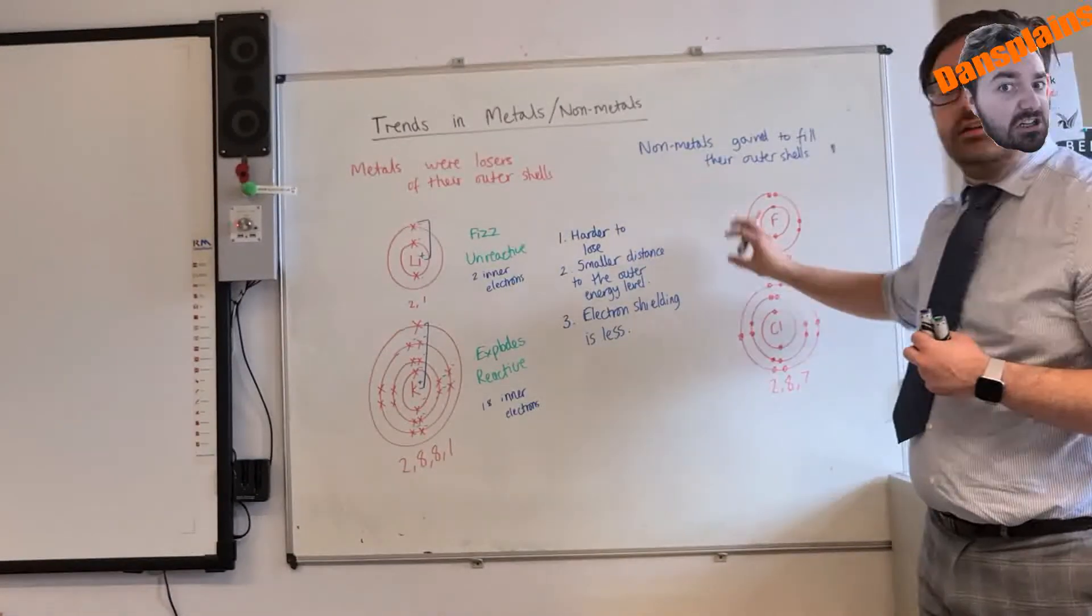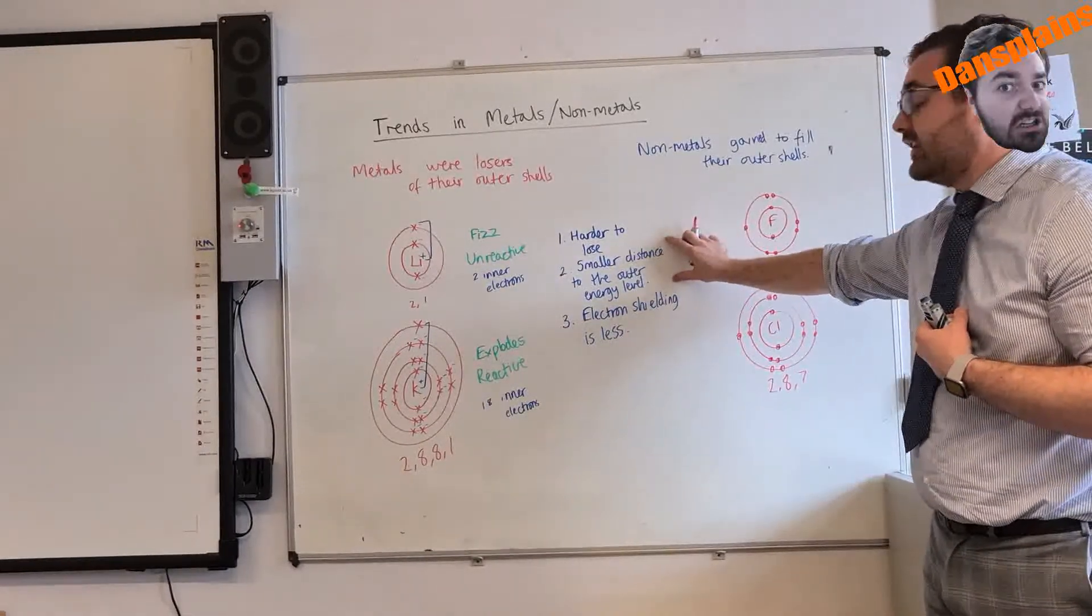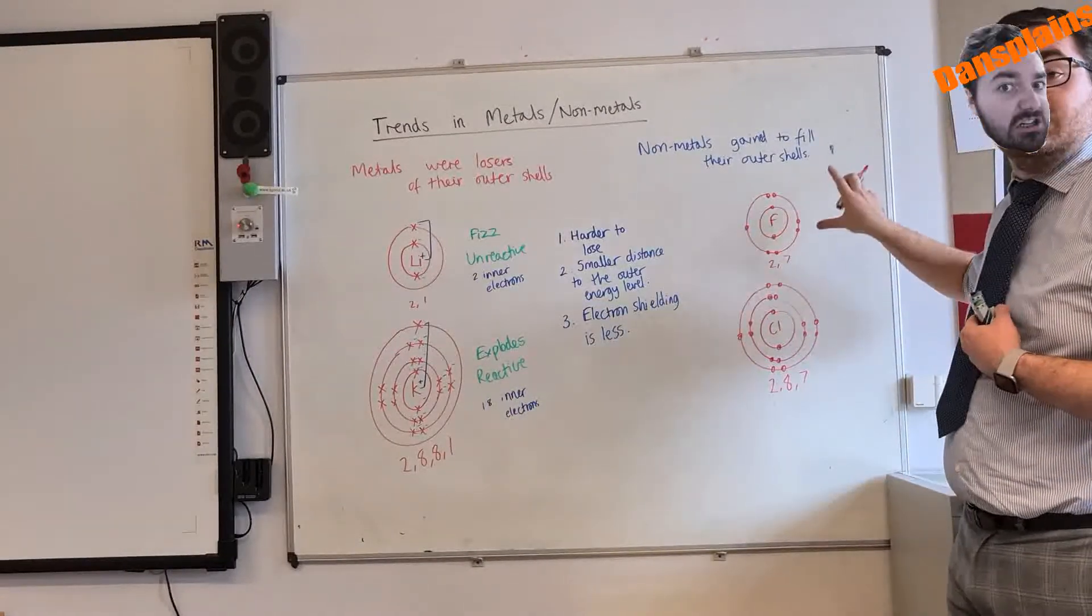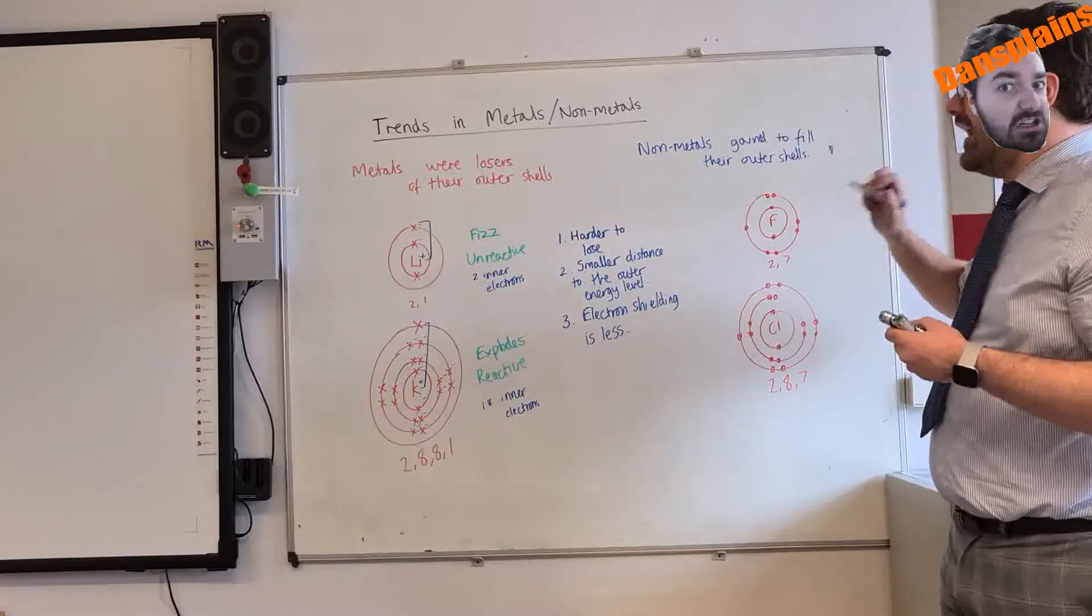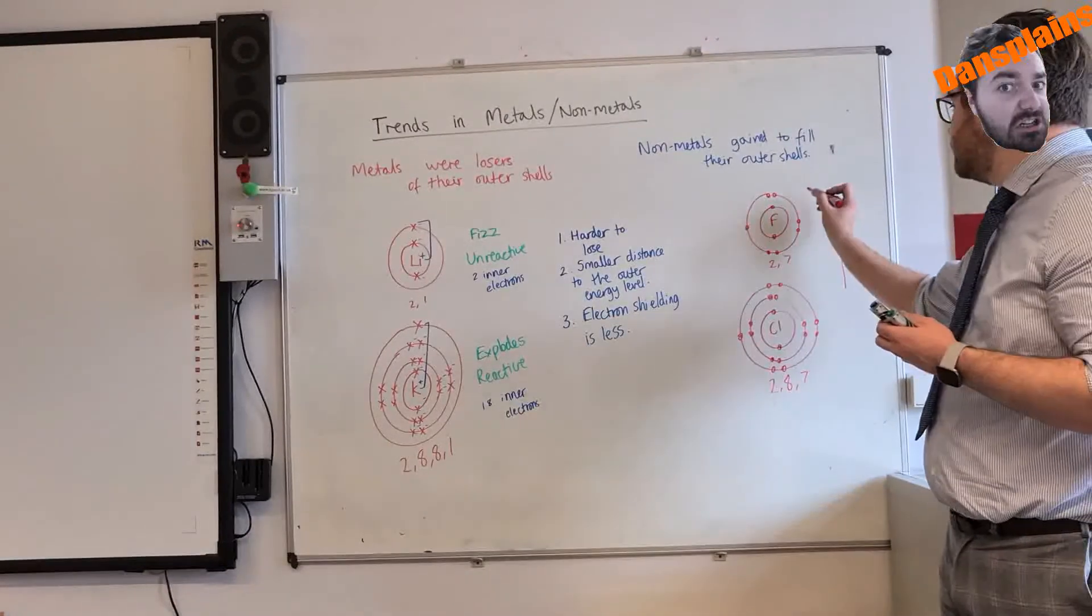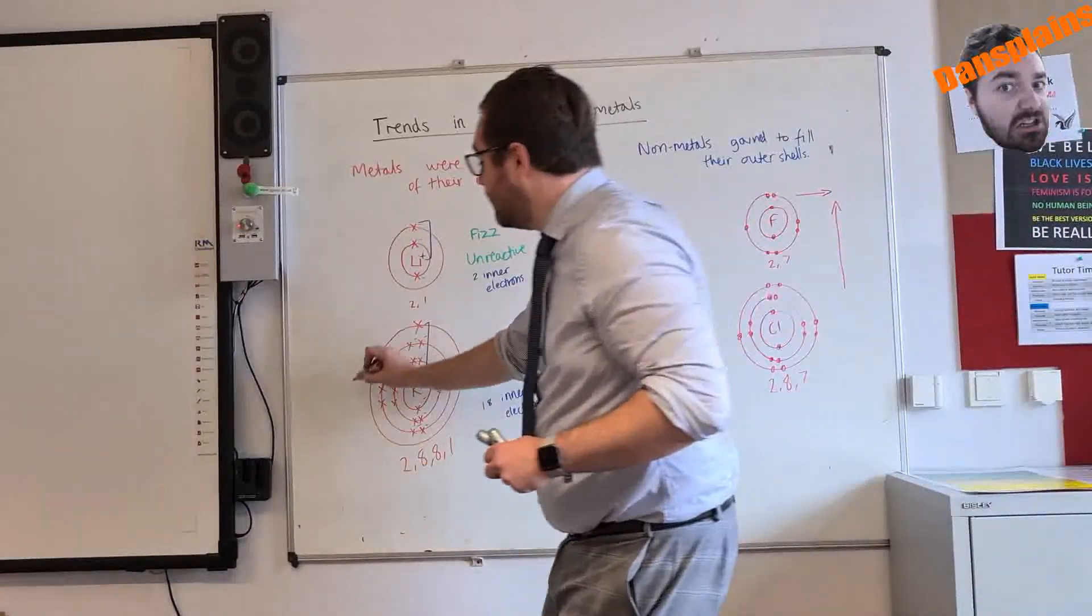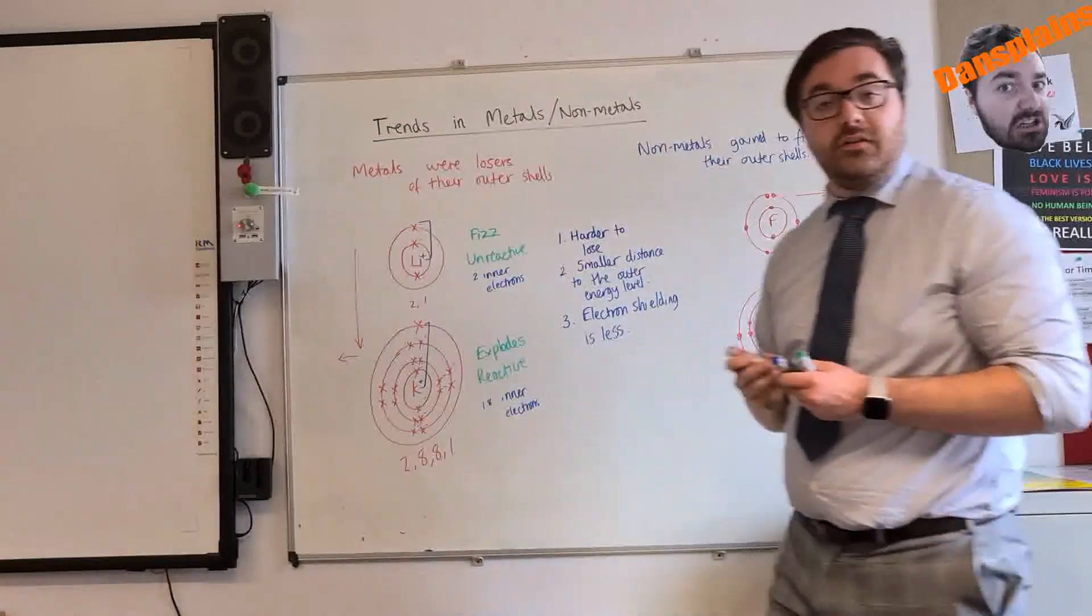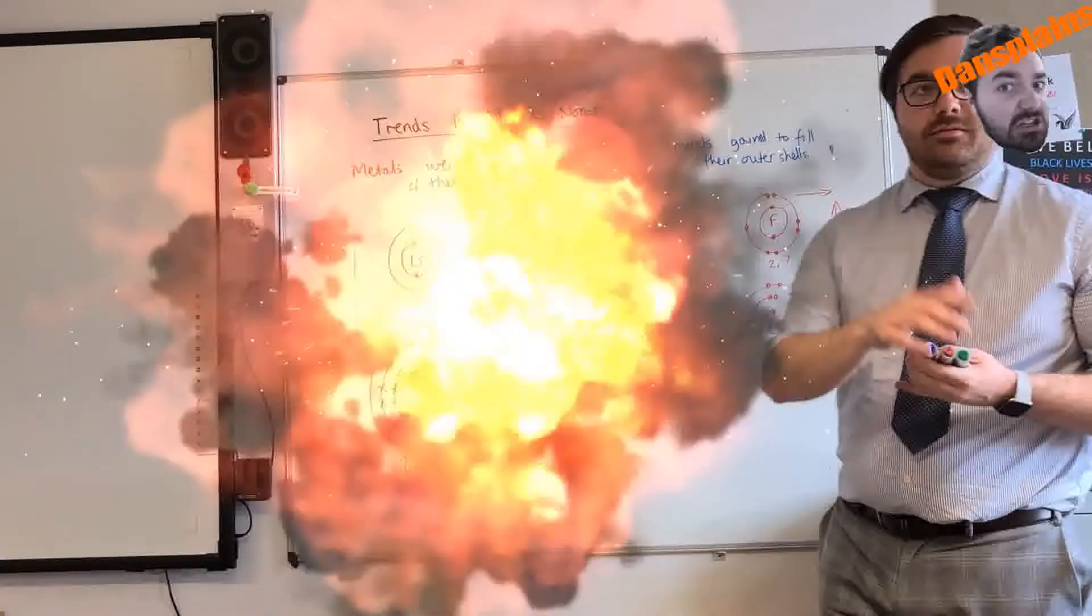But we can use the same rules. Nonmetals want to gain. For fluorine, it's much easier to gain because I have a smaller distance to my outer energy level, and I have much less electron shielding with fluorine. With that in mind, that means that in nonmetals, if I go to the top right of the periodic table, I will get more reactive. And if I go to the bottom left of the periodic table for metals, it will get more reactive.